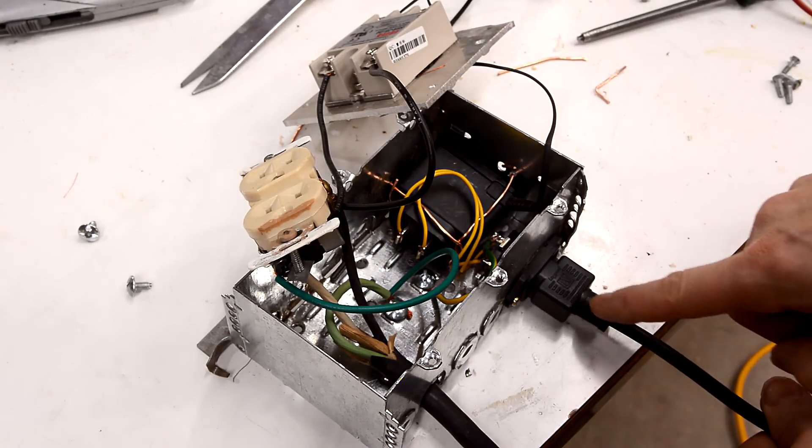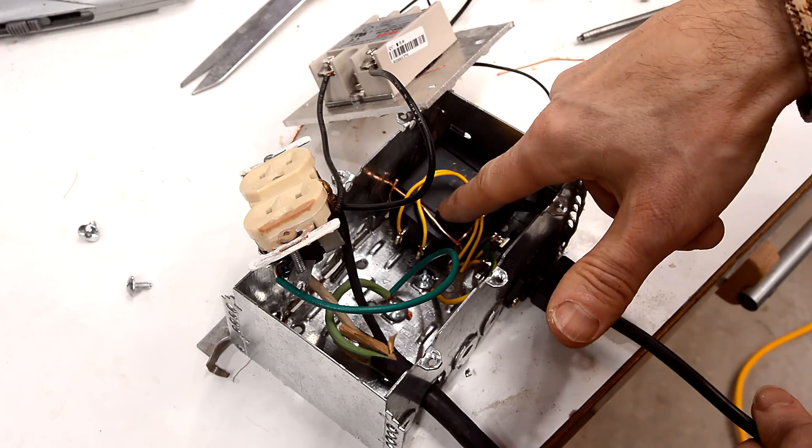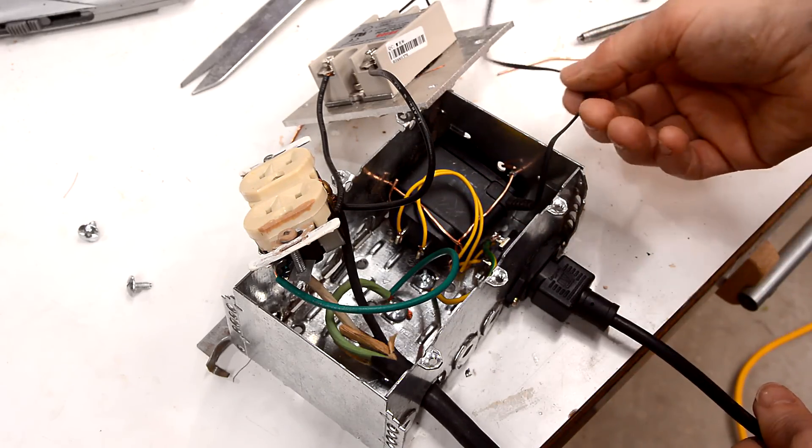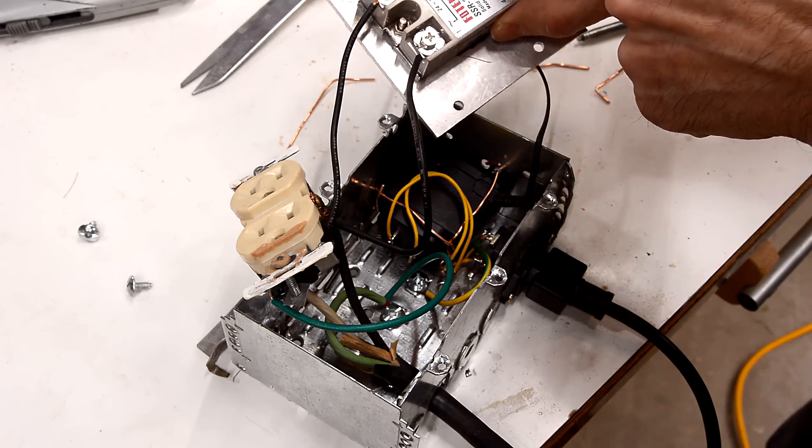This is where the 240 volt from the table saw comes in. Goes through these yellow wires into the power adapter for the cell phone charger. And that goes to here, provides 5 volts to the relay which can take anything from 3 to 32 volts.